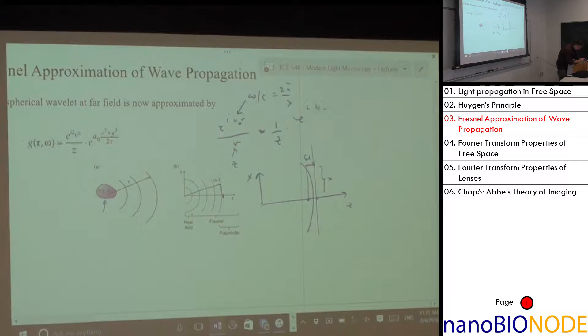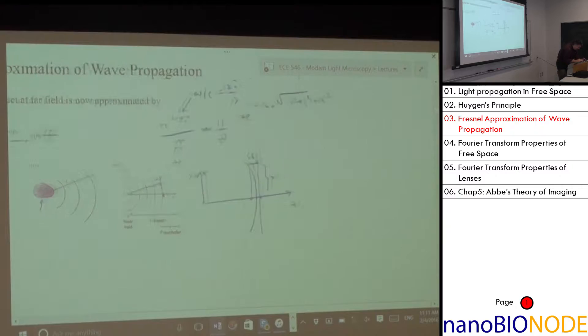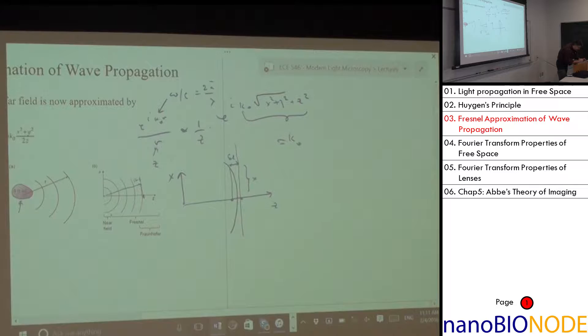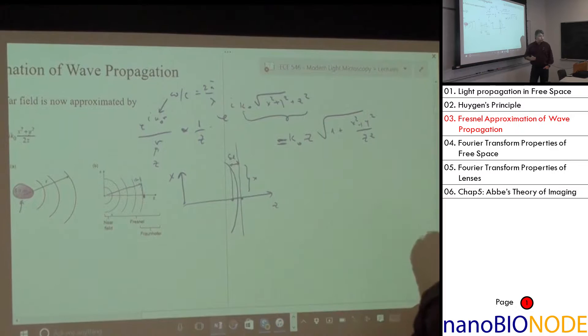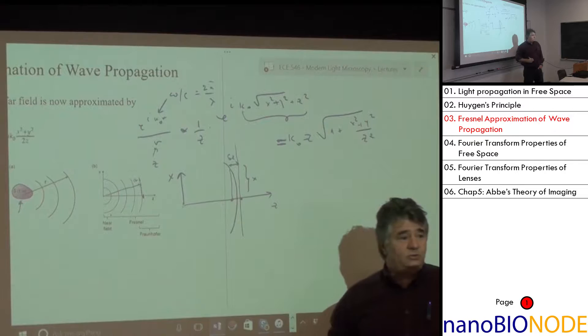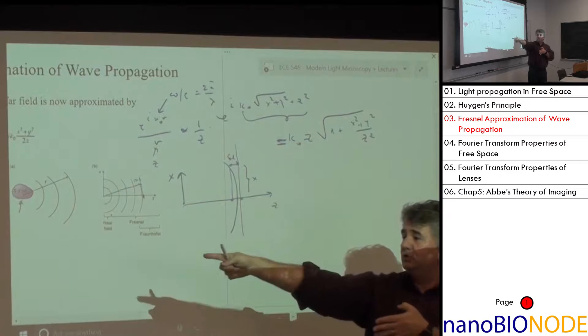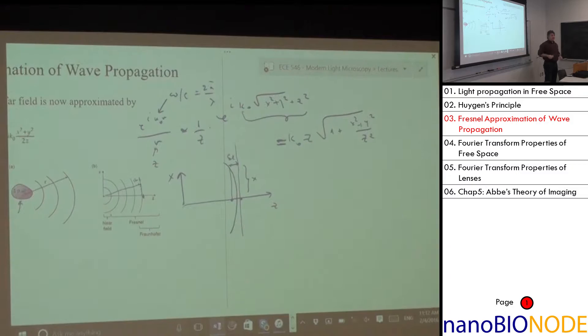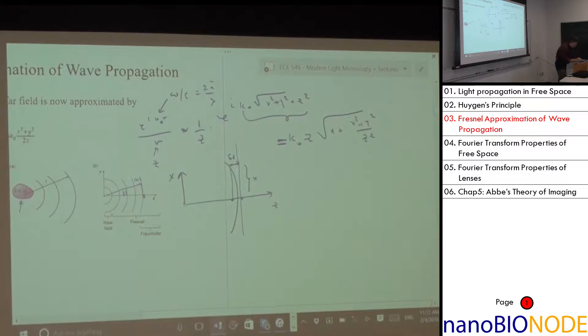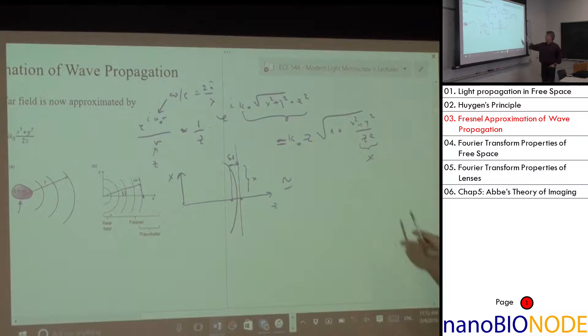The exponent is k₀ times the square root of x² + y² + z², which equals k₀z times the square root of 1 + (x² + y²)/z². That's no approximation yet — I just factored z out of the square root. We don't like square roots because they don't transform nicely. Now, if z is very large compared to x and y — meaning the on-axis distance is much bigger than the off-axis shift, i.e., angles are small — I can do a Taylor expansion.